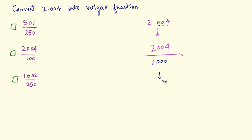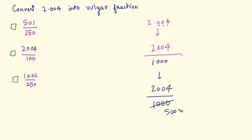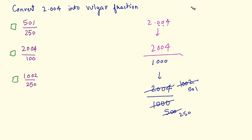So this is 2004 divided by 1000. Now I have to reduce this to the lowest terms. 2004 divided by 1000 — both can be divided by 2. 1000 divided by 2 gives 500, and 2004 divided by 2 gives 1002. Again, dividing both by 2: 1002 divided by 2 gives 501, and 500 divided by 2 gives 250. So the answer is 501 by 250.